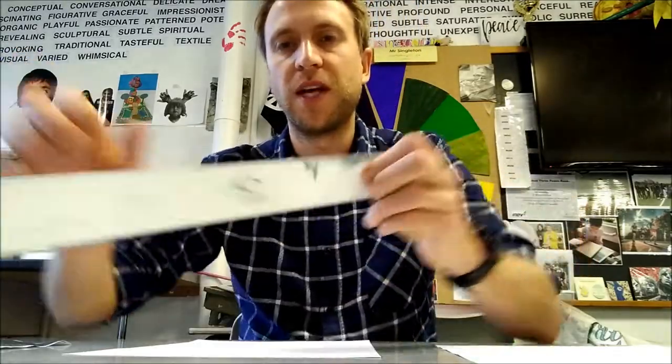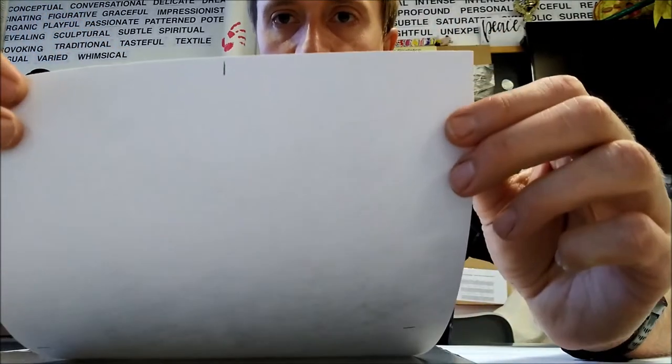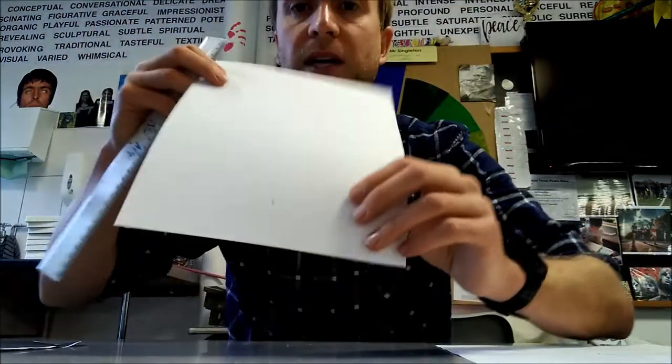The first thing you're going to do is get your ruler and measure the top of your paper. Find halfway and do a little mark halfway across the top. You're going to do exactly the same at the bottom.